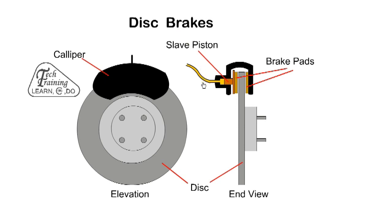We start with disc brakes. The disc or rotor is attached to the wheel and is surrounded by the brake caliper. The brake pads are located on both sides of the disc.